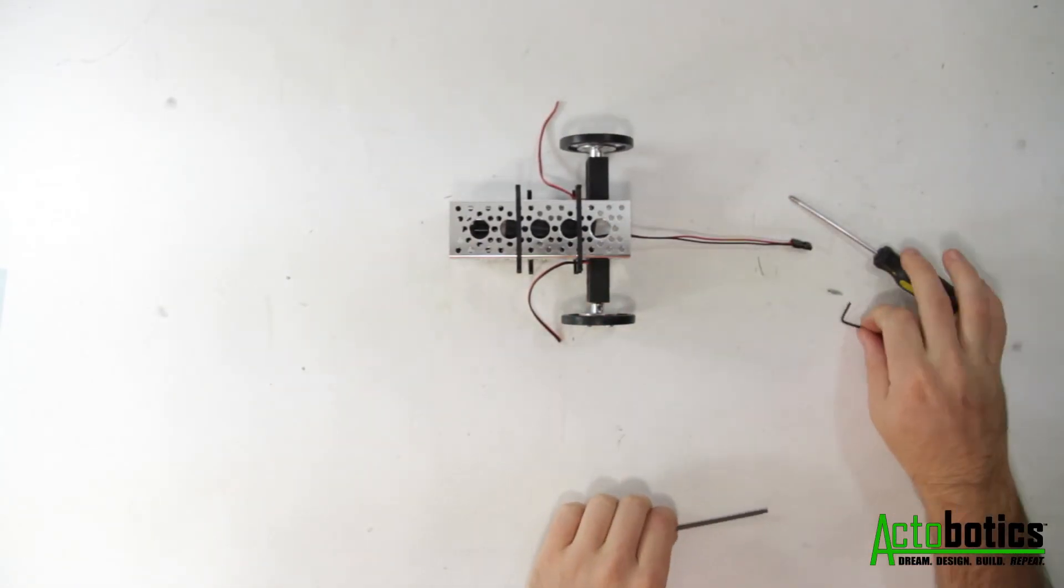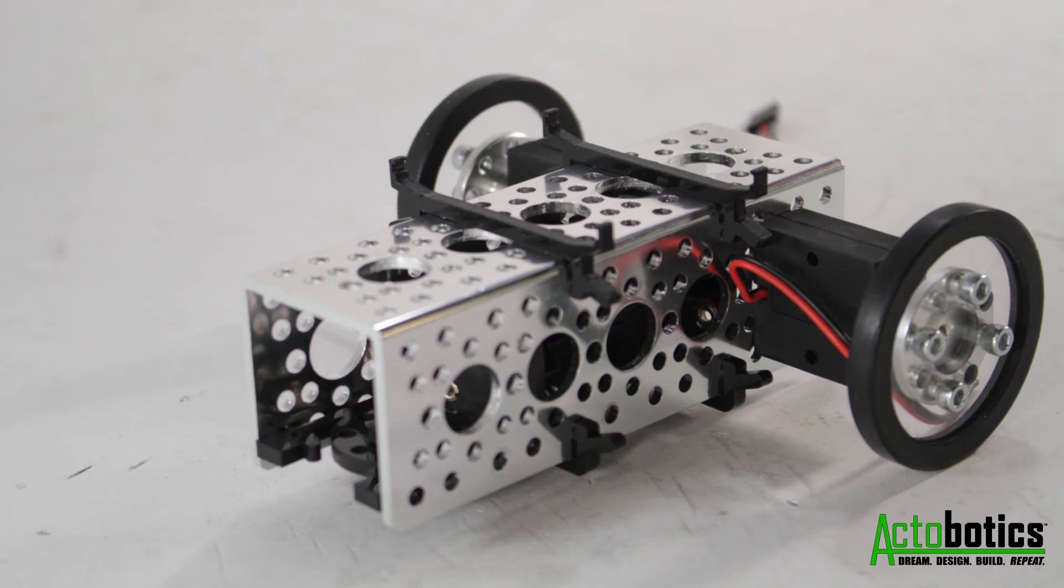And that is how you assemble your Actobity robot kit. We'll have more videos out in the future with projects using this kit as well as additional attachments and microcontroller mounts. Thank you for watching.